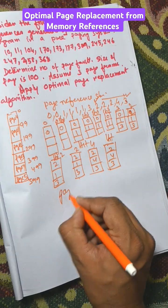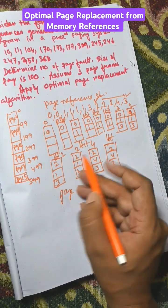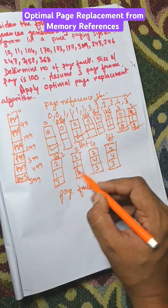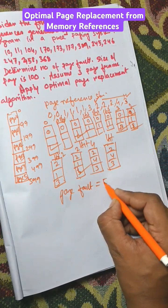So page faults: number of page faults equal to 1, 2, 3, 4, and 5. That is page fault equal to 5.